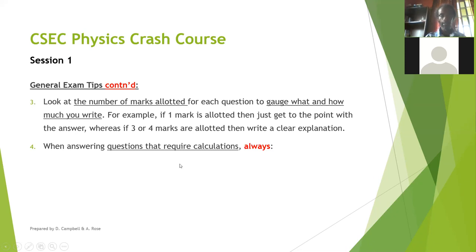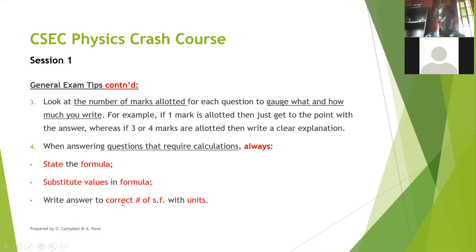For questions that require you to work out a calculation, you must always state your formula first, then substitute the values into the formula, and finally give your answer to the correct significant figures and units. CXC will give you marks for each of these steps — one mark for the correct formula, another for substituting values, and a mark for the answer with correct units. Even if the question is one mark, still write the formula.